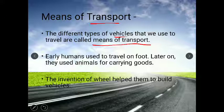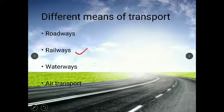Early humans used to travel on foot because they were not having any vehicles, and later on they used animals for carrying their goods. A major invention was the wheel, which helped them to build vehicles. Today the main modes of transport are roadways, railways, waterways, and air transport.